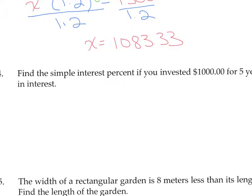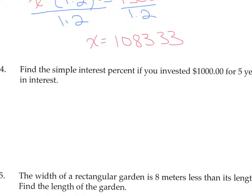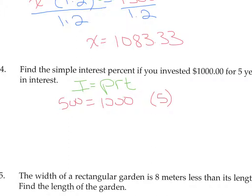Here we have an interest question. Find the simple interest percent if you invested $1,000 for five years and received $500 in interest. We start with the formula: Interest equals principal times rate times time. We substitute the numbers in wherever they belong. We invested $1,000 — that's the principal. Five years is the time. We earned $500 in interest, so that's I. We're looking for the rate R, so we need to simplify the right side: 5 times 1,000 makes 5,000 times R equals 500.